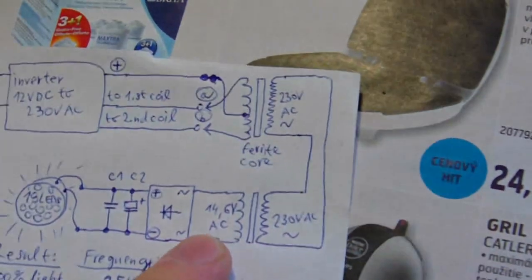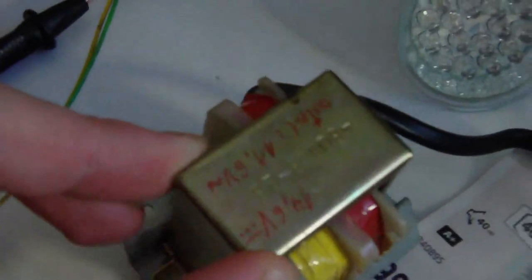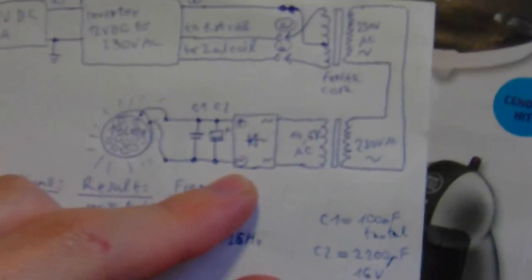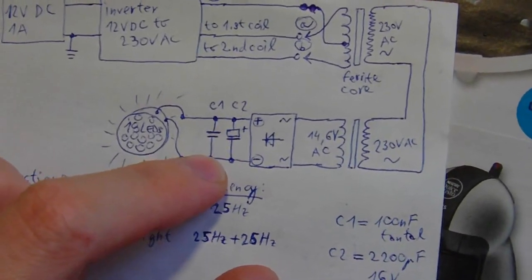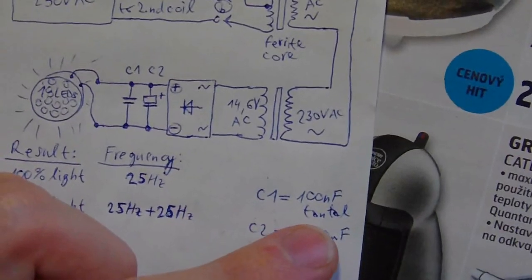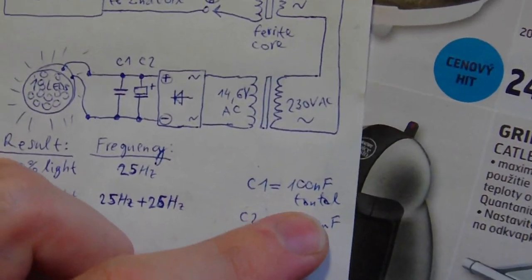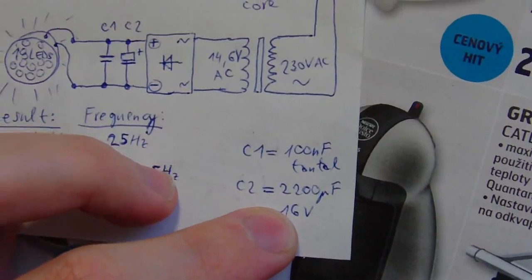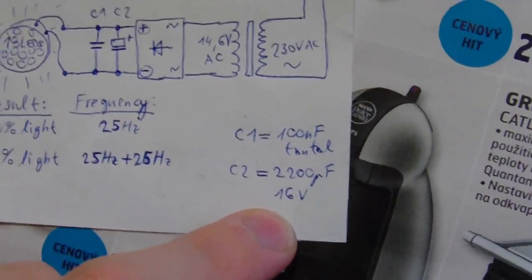Here is the ferret core. Other transformer. Here is my small transformer. And output goes here to the diode bridge and filter with 2 capacitors. 100 nF tantal and receiver 2200 mF 16V.